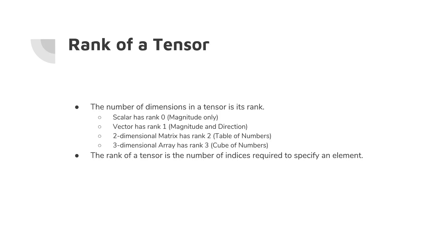Now we'll see what is the rank of a tensor. The rank of a tensor is equal to the number of dimensions of the tensor. A scalar has no dimensions, so it has rank zero — it just has magnitude and no direction. A vector has a rank of one. A two-dimensional matrix has a rank of two because it has rows and columns. A three-dimensional array has a rank of three, which is essentially a cube of numbers.